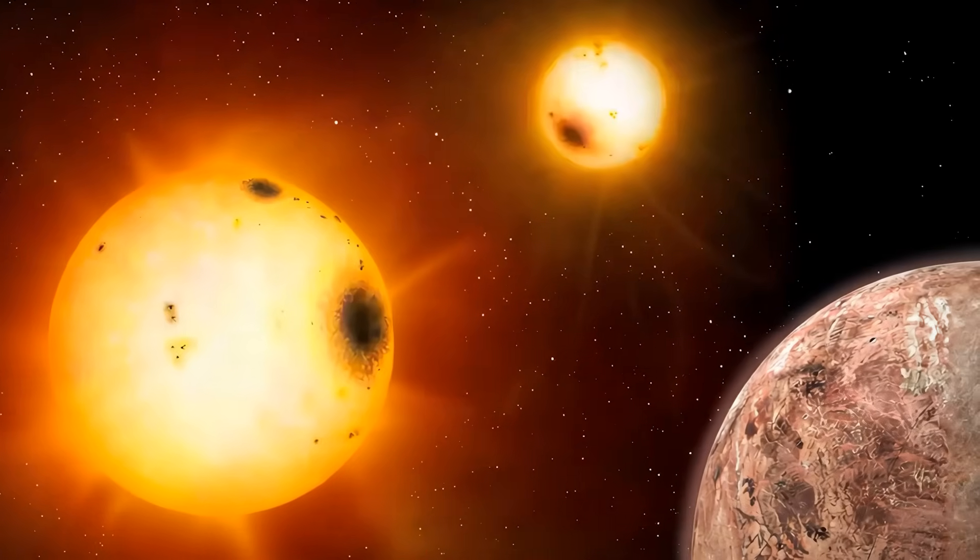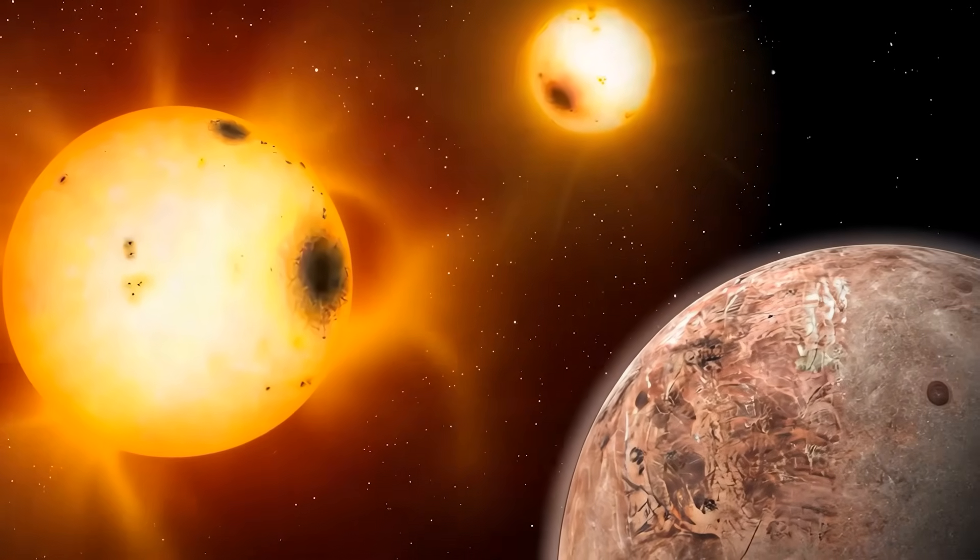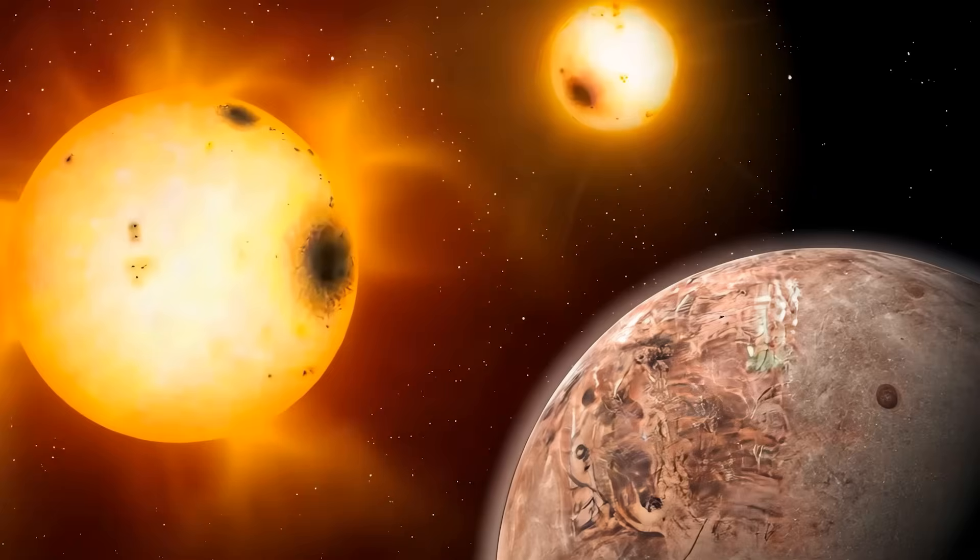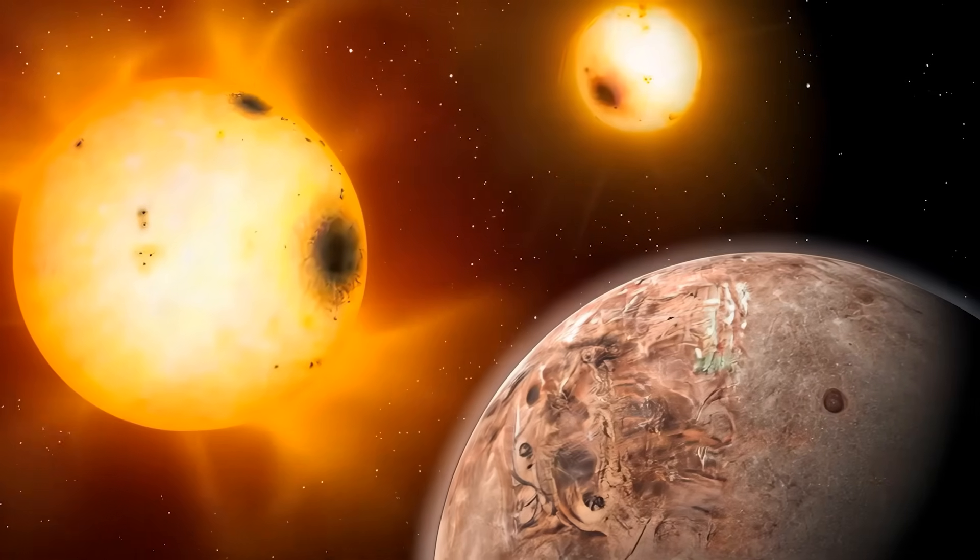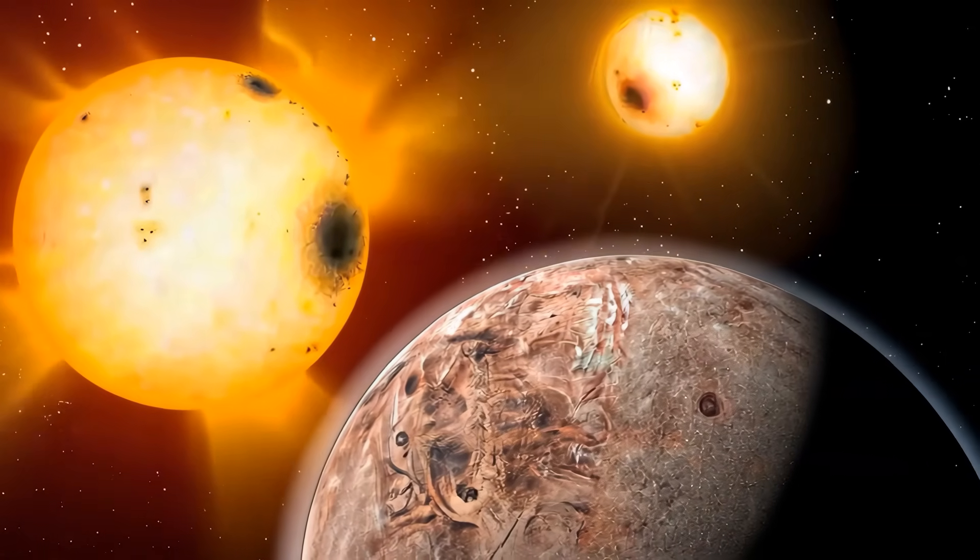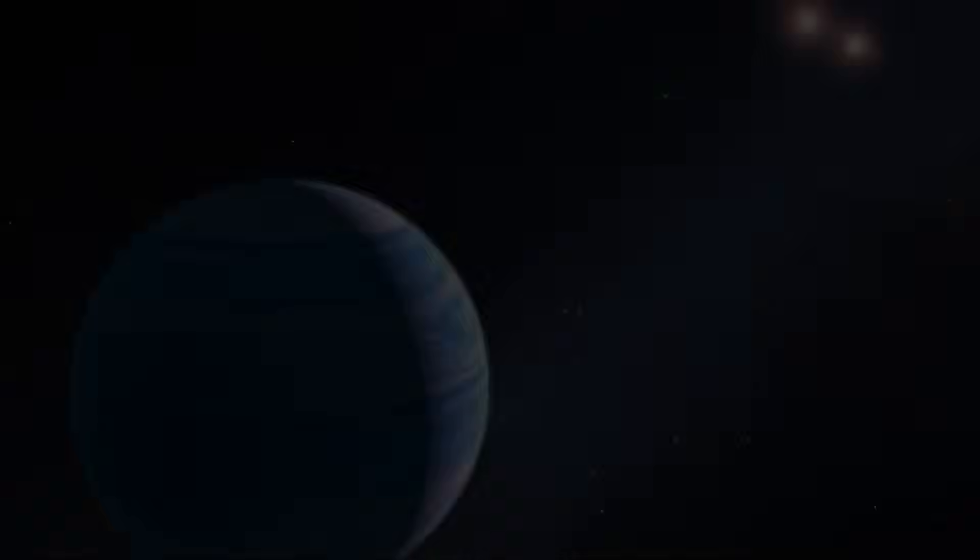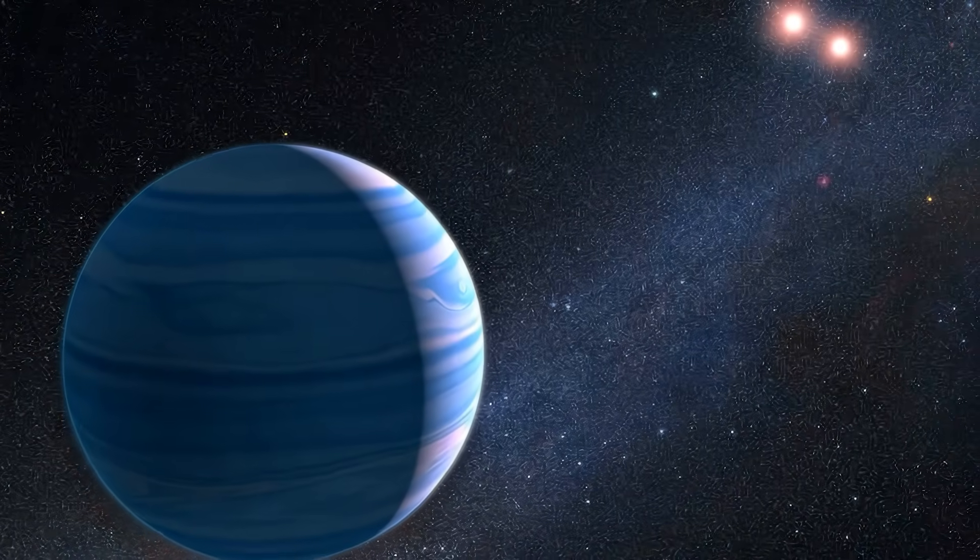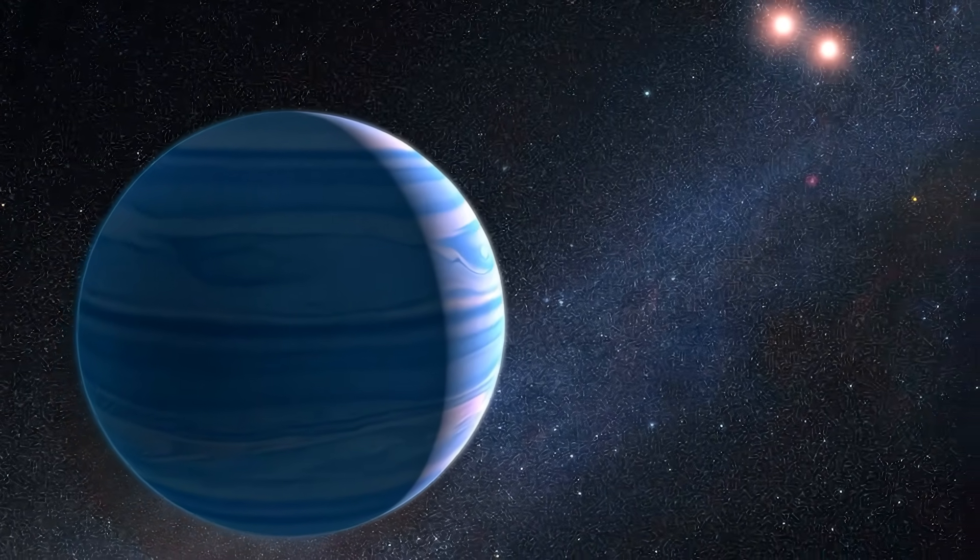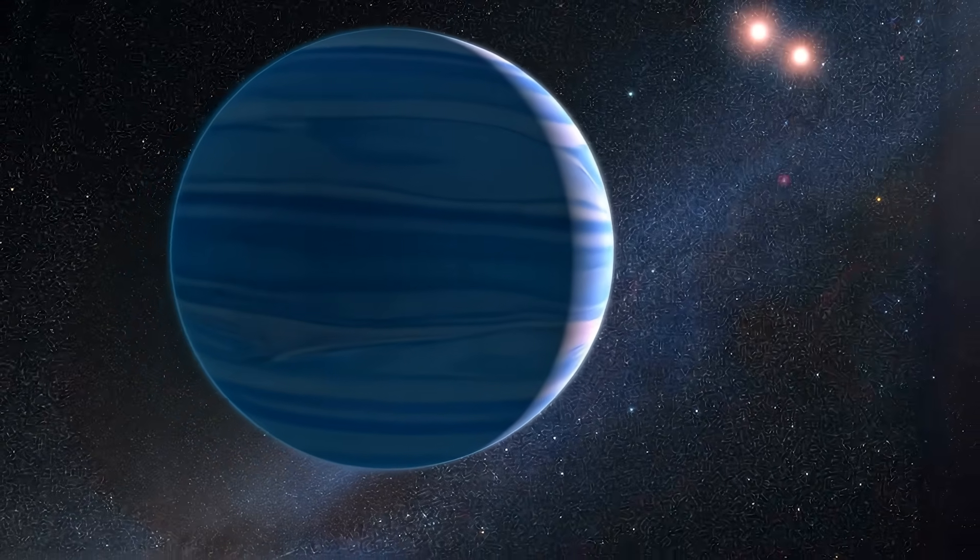The discovery of this real-life extreme Tatooine is pushing astronomers to expand their search parameters. If planets can form or survive in such unexpected configurations, how many have we missed by focusing only on conventional orbital planes? The statistical rarity of finding such a system suggests that polar circumbinary planets may actually be relatively common, we just weren't looking for them in the right way.